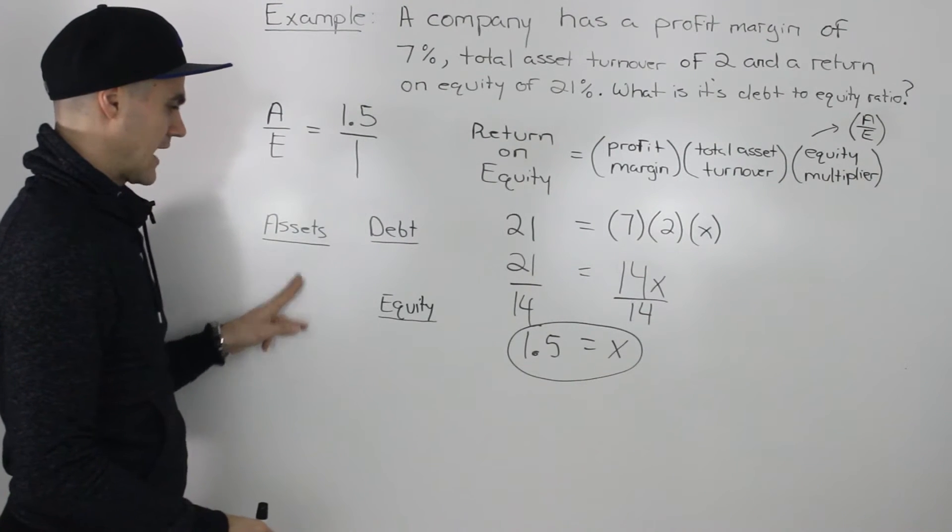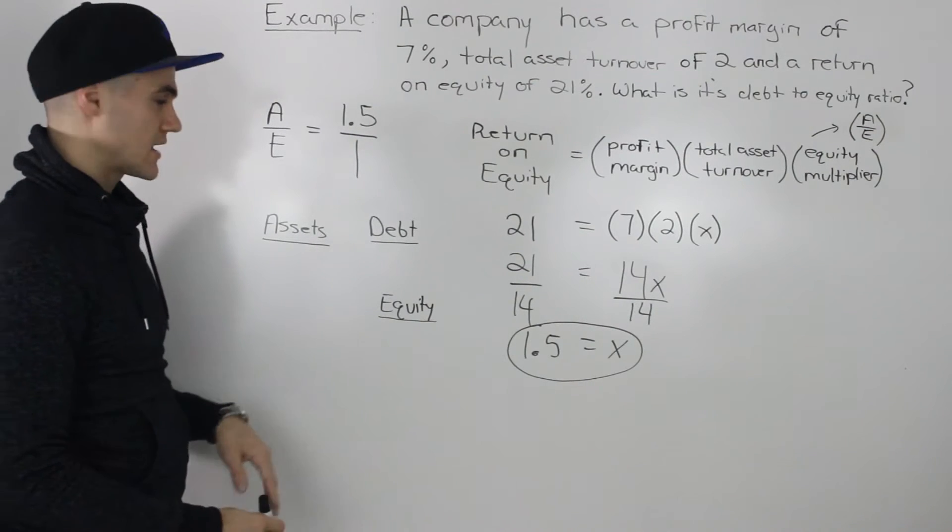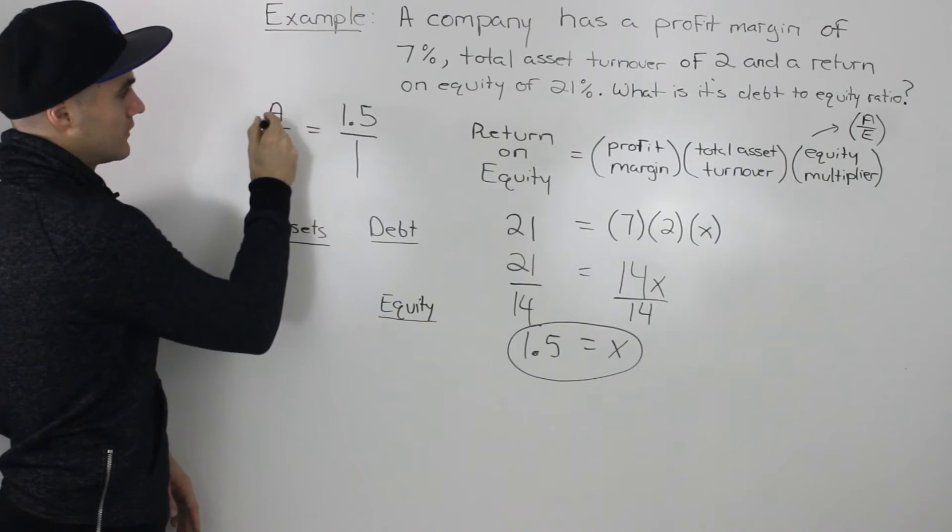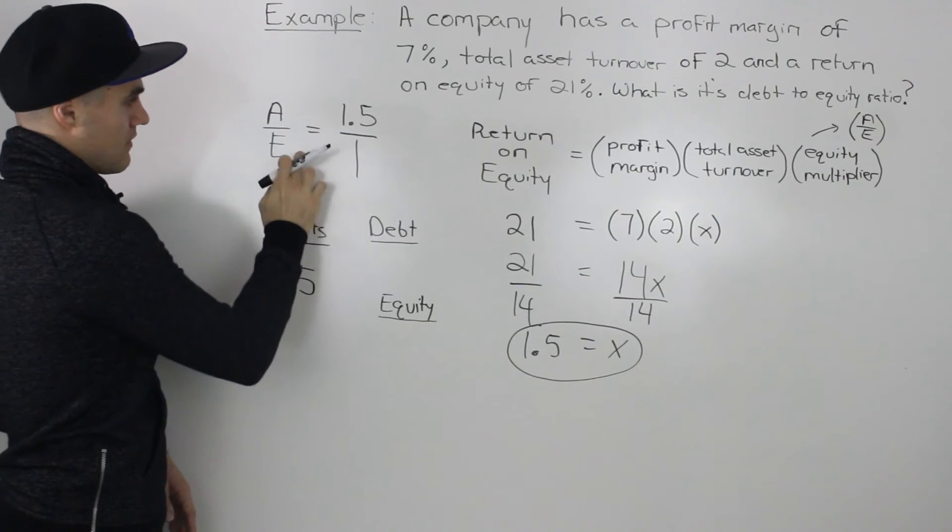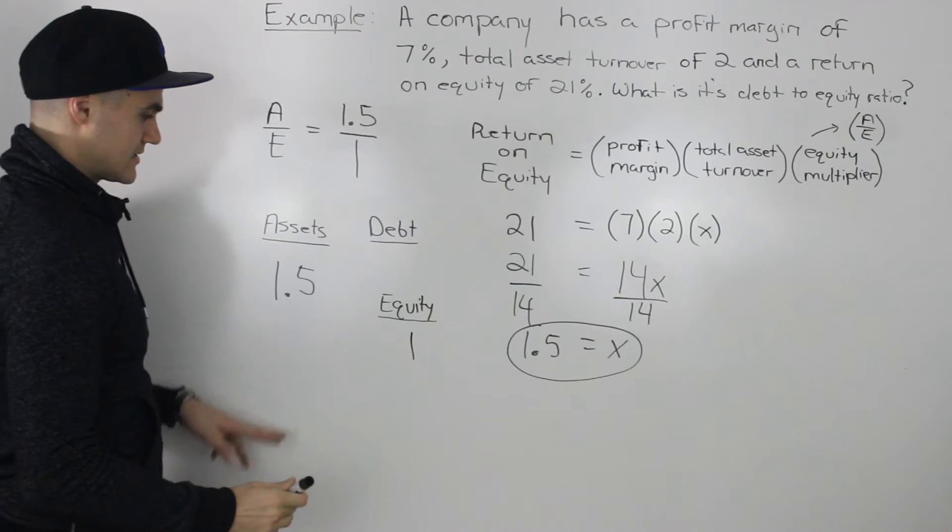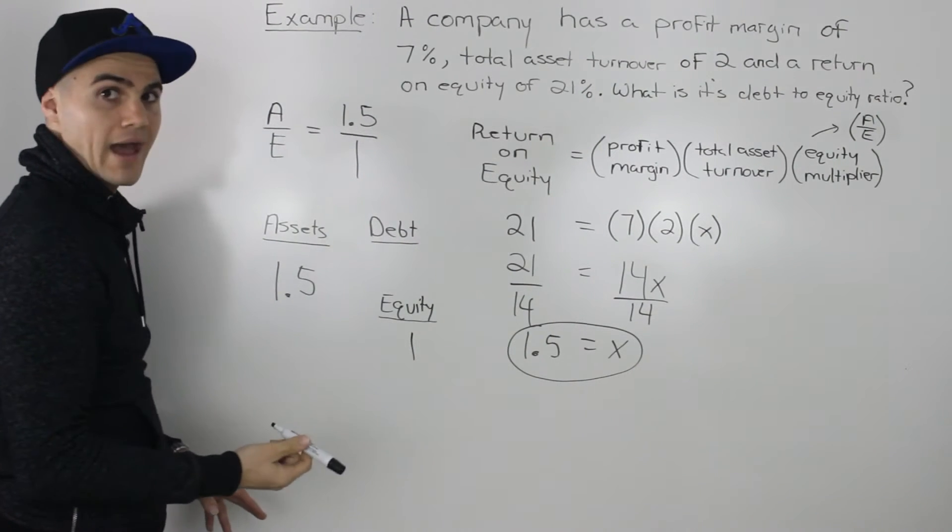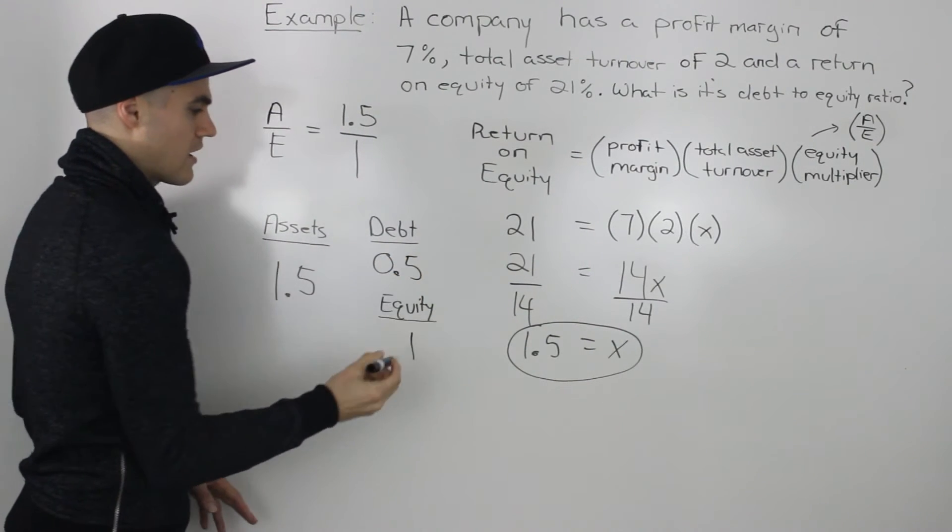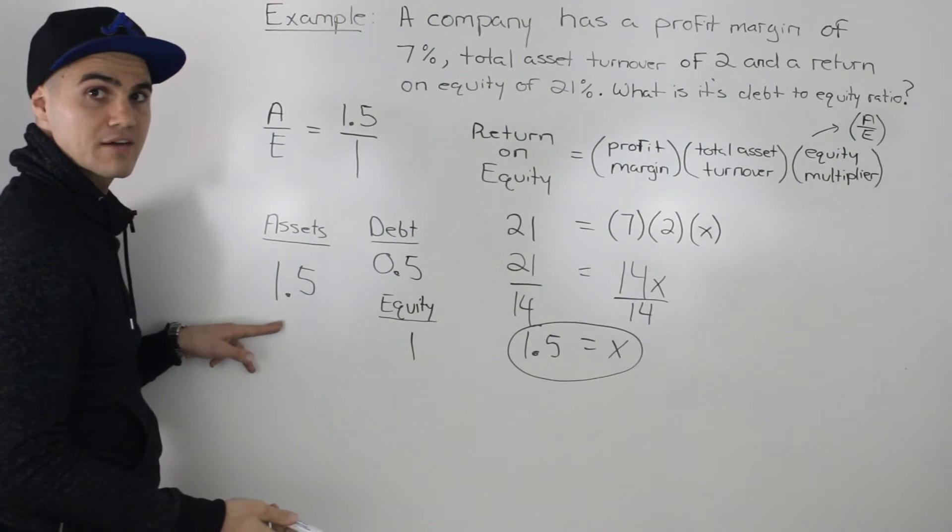So then creating this balance sheet here, we got the assets on the left side, the debt and equity on the right side. Both the left side and the right side have to equal. And going back to our ratio, our assets is represented in the numerator, and that's 1.5. So we could put 1.5 here. The equity is in the denominator. That's just 1. And since both sides have to balance, we know that the debt plus equity has to equal the assets. So right away, we can tell that our debt has to be 0.5, because 0.5 plus 1 is 1.5, and that would equal the left side, the assets.